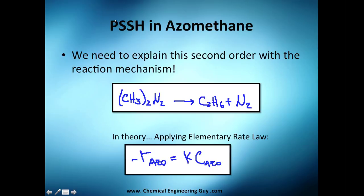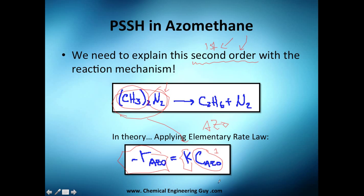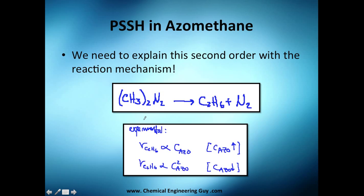We're looking at azomethane — 'azo' because of the nitrogen, 'methane' because of the methane. We need to explain this because sometimes it acts as second order and sometimes it acts as first order, which is strange. In theory, if we apply the elementary rate law, the rate of reaction of azomethane equals the rate constant times the concentration of azomethane to the first power.